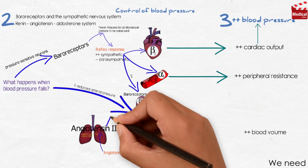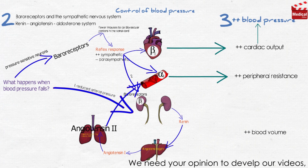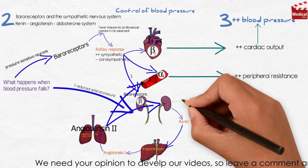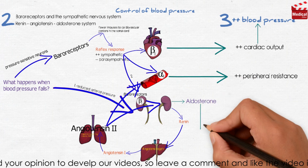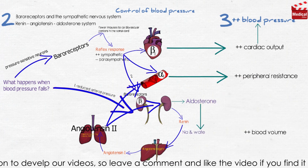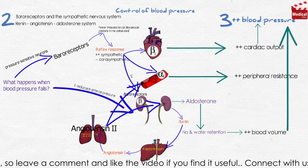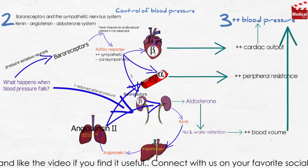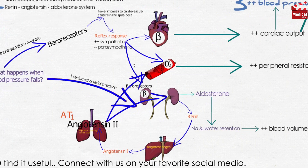Angiotensin-2 is a potent circulating vasoconstrictor, constricting both arterioles and veins, increasing peripheral resistance and blood pressure. Angiotensin-2 also stimulates aldosterone secretion, leading to increased renal sodium reabsorption and increased blood volume, which contribute to a further increase in blood pressure. These effects of angiotensin-2 are mediated by stimulation of angiotensin-2 type 1, AT1, receptors.